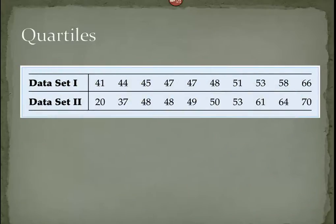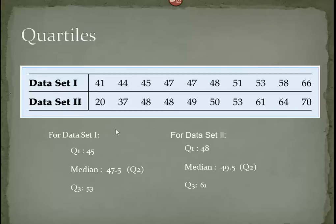Alright, so let's take a look at a couple sets of data. We're actually going to do data set one first. For this data set, we have ten values. One, two, three, four, five, six, seven, eight, nine, ten. That means we have an even set of values. The location of the median is going to be ten plus one divided by two, which is five point five. So, as we go through here, the median is going to be the mean of these two numbers, forty-seven and forty-eight. So, it's forty-seven point five.